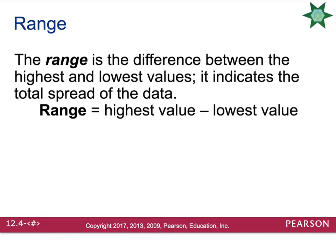The first type of dispersion is the easiest to calculate, and this is the range. The range is just the difference between the highest and lowest value, and it indicates the total spread of the data. To calculate the range, all you have to do is take the highest data value minus the lowest data value, and this will be your range.